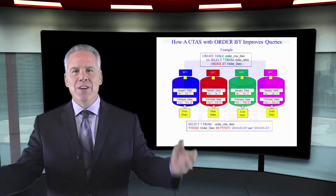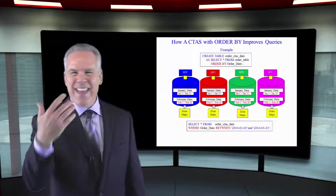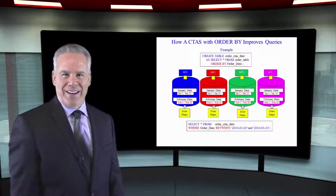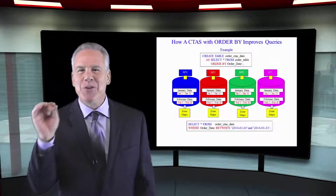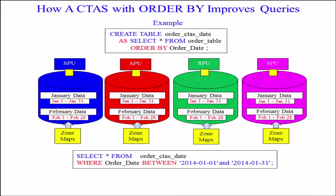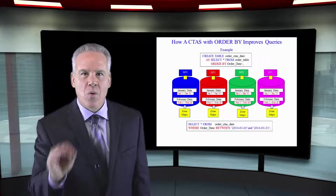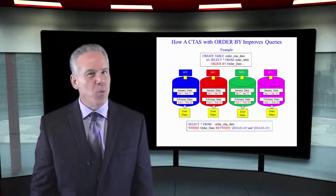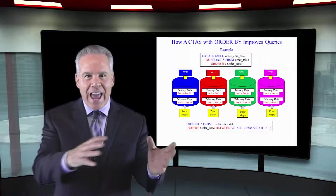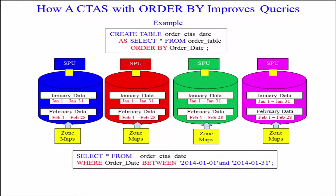When you're loading to a normal Netezza table with NZ Load you don't order the data. You give it a distribution key, but you don't order the data. That's what's so beautiful about a CTAS table — as you can see here, I'm creating a table called 'order CTAS date' as SELECT everything FROM order table ORDER BY order date. So what this does is it actually reloads the table to the new table, but now the data is sorted on each spoo by the order date.